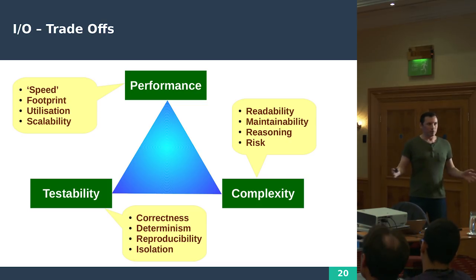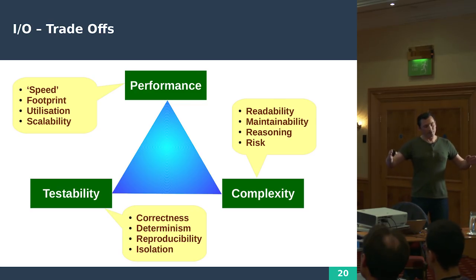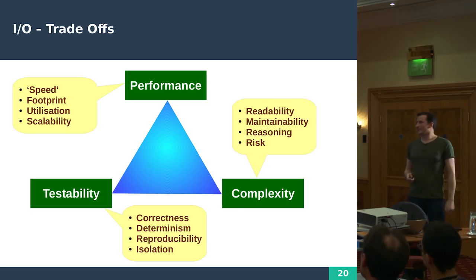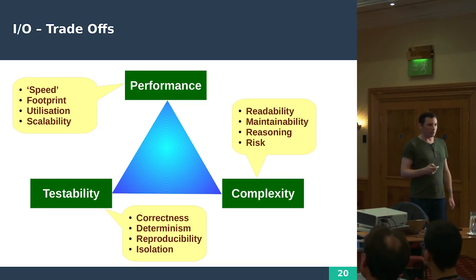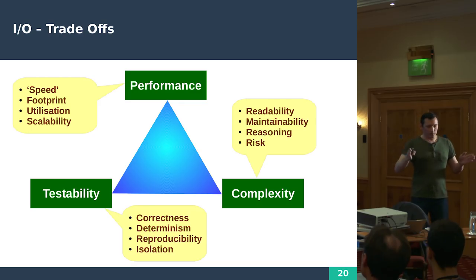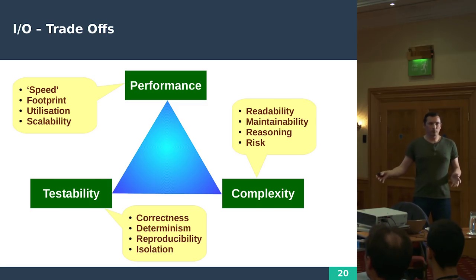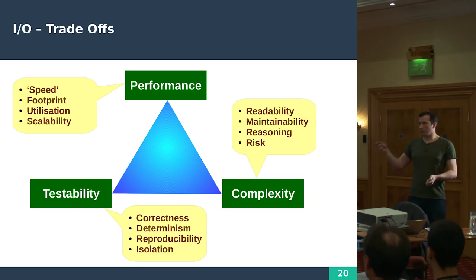If you've got some processing to do — say a gigabyte of data that needs processing — we often care about how fast you can do that. Other aspects of performance: footprint, the amount of memory you use, is quite important. Utilization is one we don't often think about, but it becomes very important when talking about concurrency and I/O. If your CPU sits idle, you're wasting resources that could be doing processing.